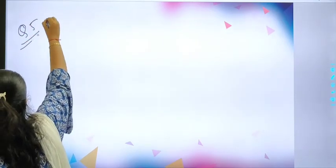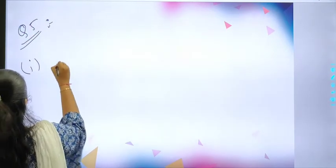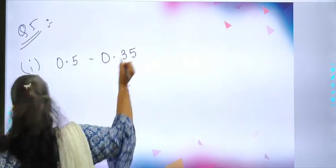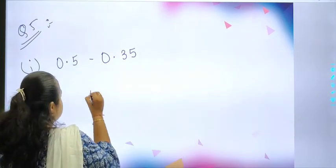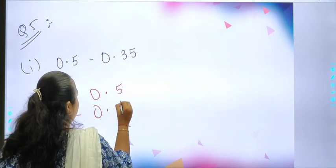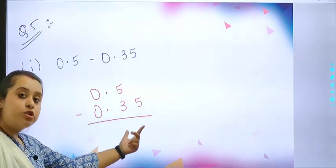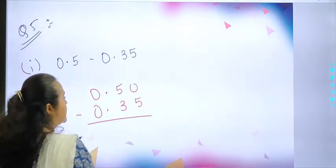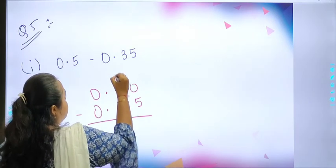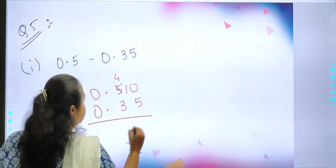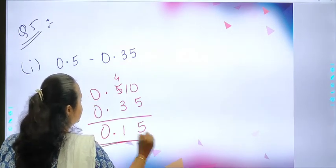Your question number 5 is subtract 0.5 minus 0.35. This is very easy. We have solved all these types of sums. 0.5 minus 0.35. Again, 1 decimal place, 2 decimal places. So we will be adding 0 over here. This 5 will become 4 and this will become 10. So ultimately, your answer will be 0.15.